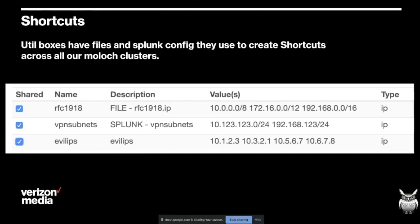Another thing we use the utility boxes for is to sync our shortcuts - that was the new feature Elise talked about earlier. The utility boxes are constantly going off to Splunk and to configuration files, sucking down configuration for shortcuts and uploading it into all the different Moloch clusters. For example, you might create an RFC 1918 shortcut so that anywhere in Moloch you could say $RFC1918 and it will match those IPs. If you have your VPN subnets in Splunk as a lookup table, you can pull it down and upload it into Moloch so you can say IP equals $VPN_subnets and it will return traffic matching your VPN subnets. You can also create local shortcuts like an evil IPs shortcut just on one cluster.